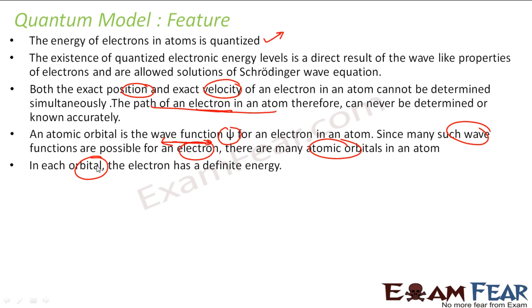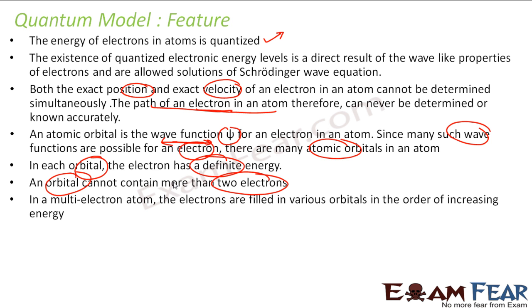Each orbital's electron has definite energy. In any orbital, you take any orbital, the electron will have definite energy in that orbital. An orbital cannot have more than two electrons. Please note, one orbital that I have shown in the past picture. Orbital can have only two electrons. In a multi-electron atom, electrons are filled in various orbitals in the order of increasing energy. We'll discuss the principle for that. So in multi-electron atoms, electrons are filled in various orbitals in the orders of increasing energy.